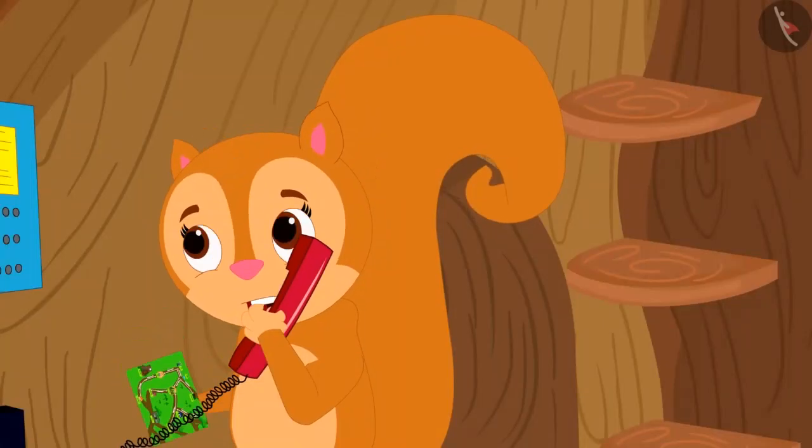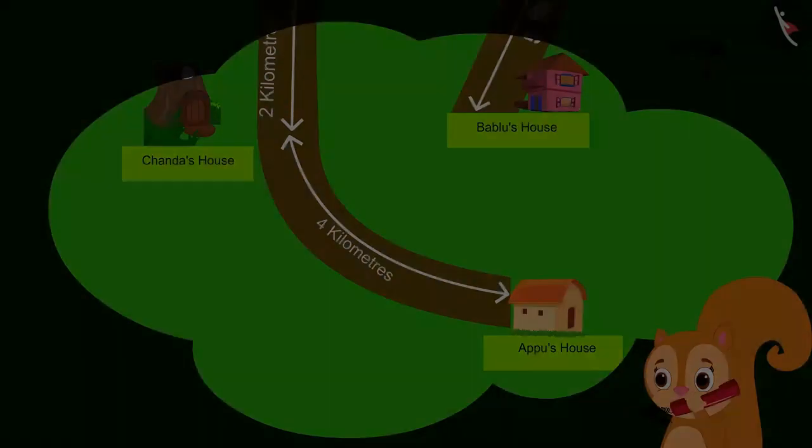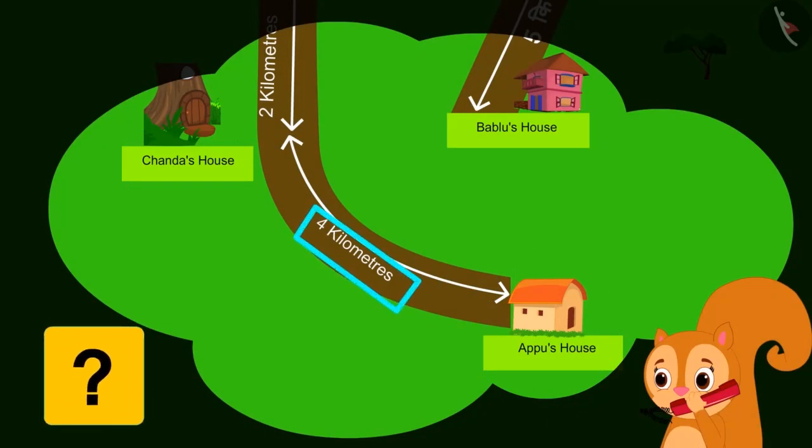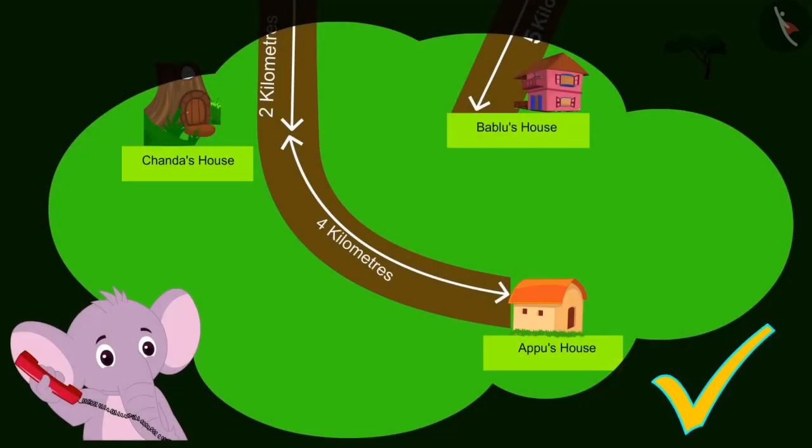Now Chanda said to Appu, I can see your house and mine on the map too. Four kilometers is written between your house and my house. So, is my house four kilometers away from your house? Yes Chanda, you have read the map correctly. Very good.